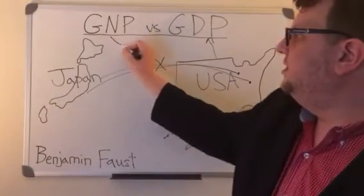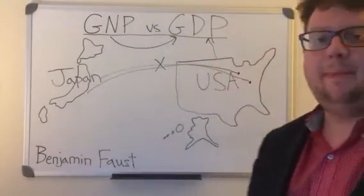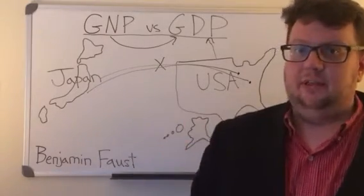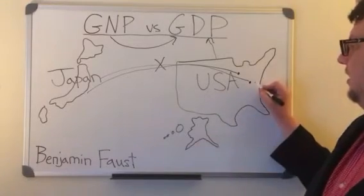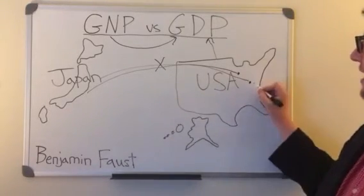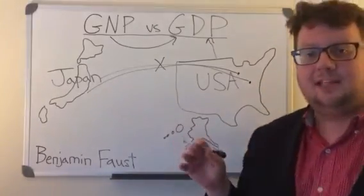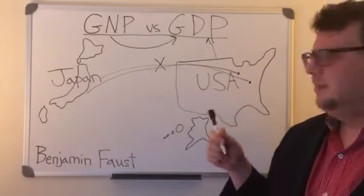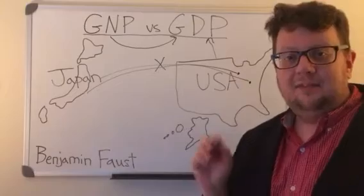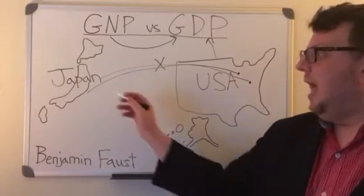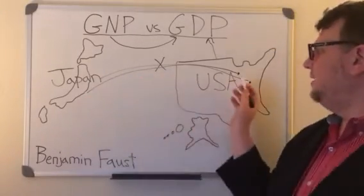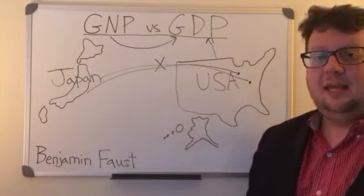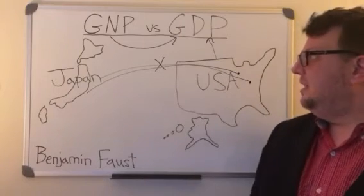Over time we have moved from GNP to GDP because it's a better measure of what we're trying to get after — what is actually being produced in the economy. The reason is that a Toyota car made by a Japanese company in the United States means most of the economic activity is happening in the United States, so under GDP it is credited to the United States. Similarly, most of the economic activity of that McDonald's hamburger is happening in Japan; only a very small royalty goes back to Illinois. That's why most of the time you'll see GDP, and that's the difference between GNP and GDP.